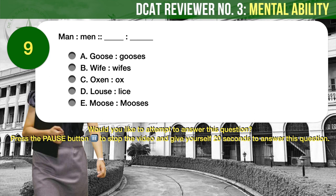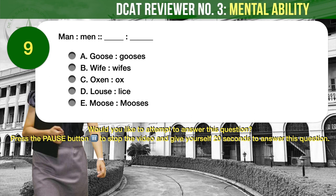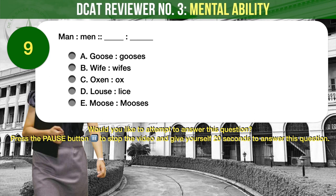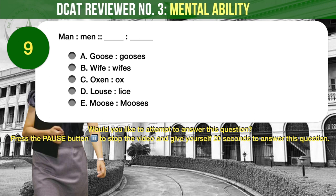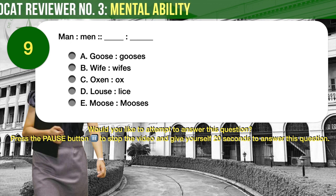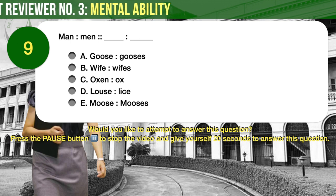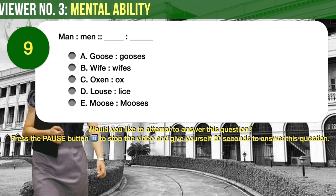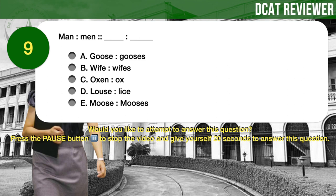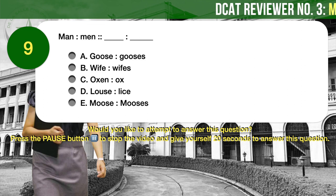Question number 9. Man is to men in the same manner that: A: Goose is to gooses. B: Wife is to wives. C: Oxen is to ox. D: Louse is to lice. E: Moose is to mooses.